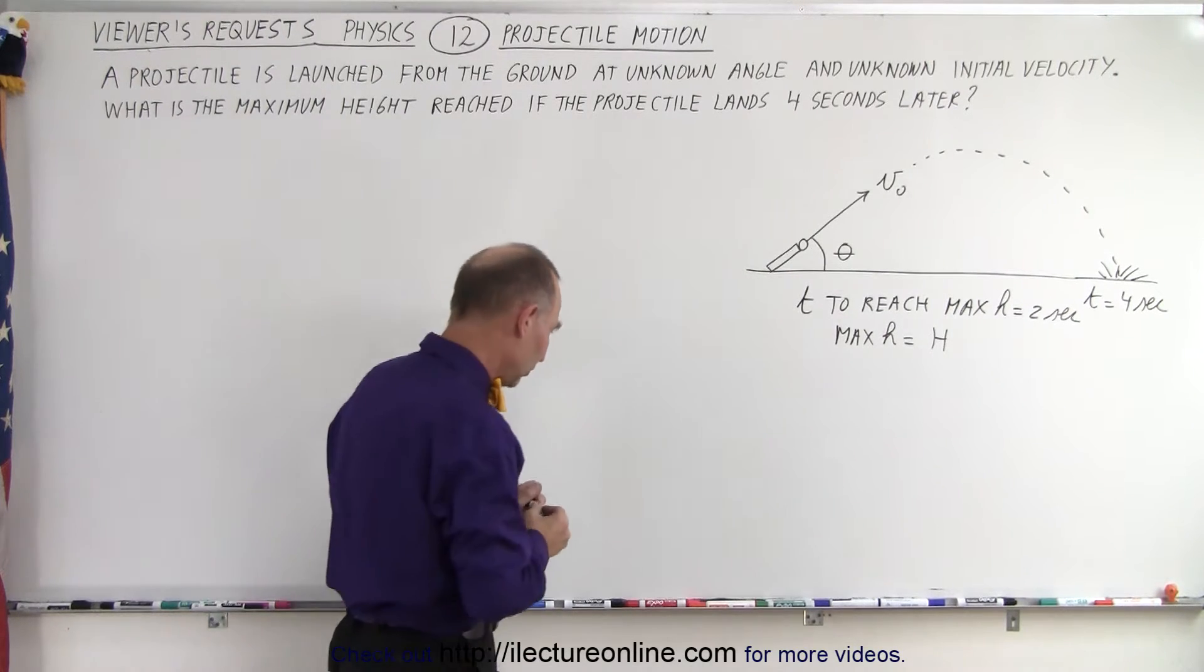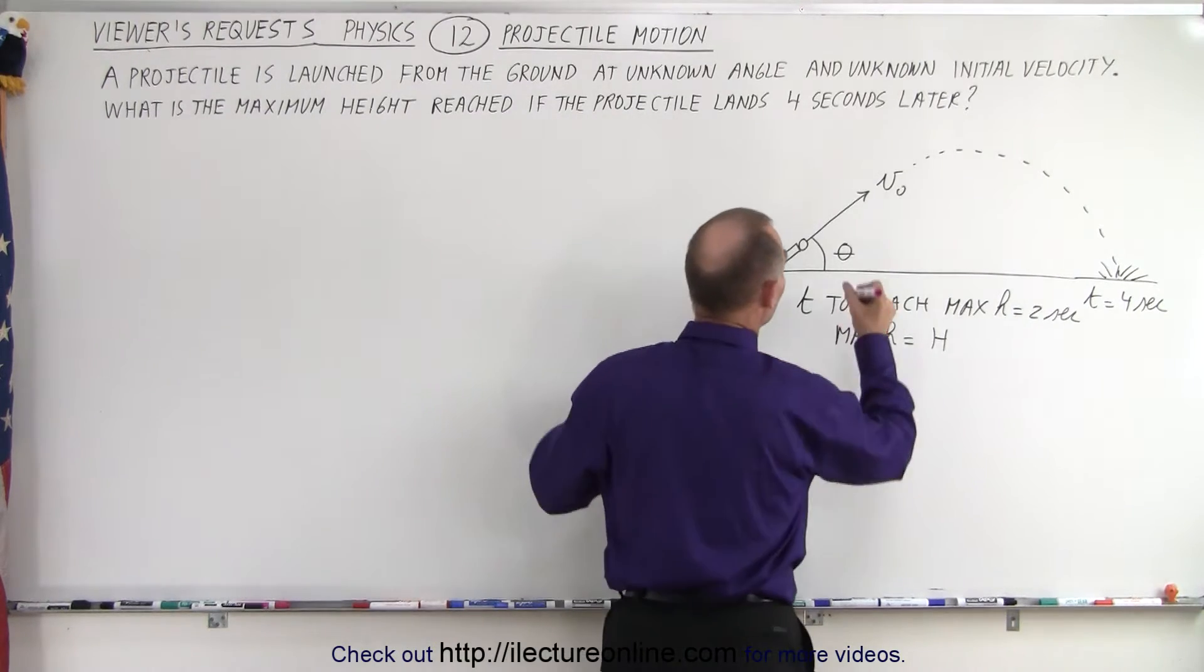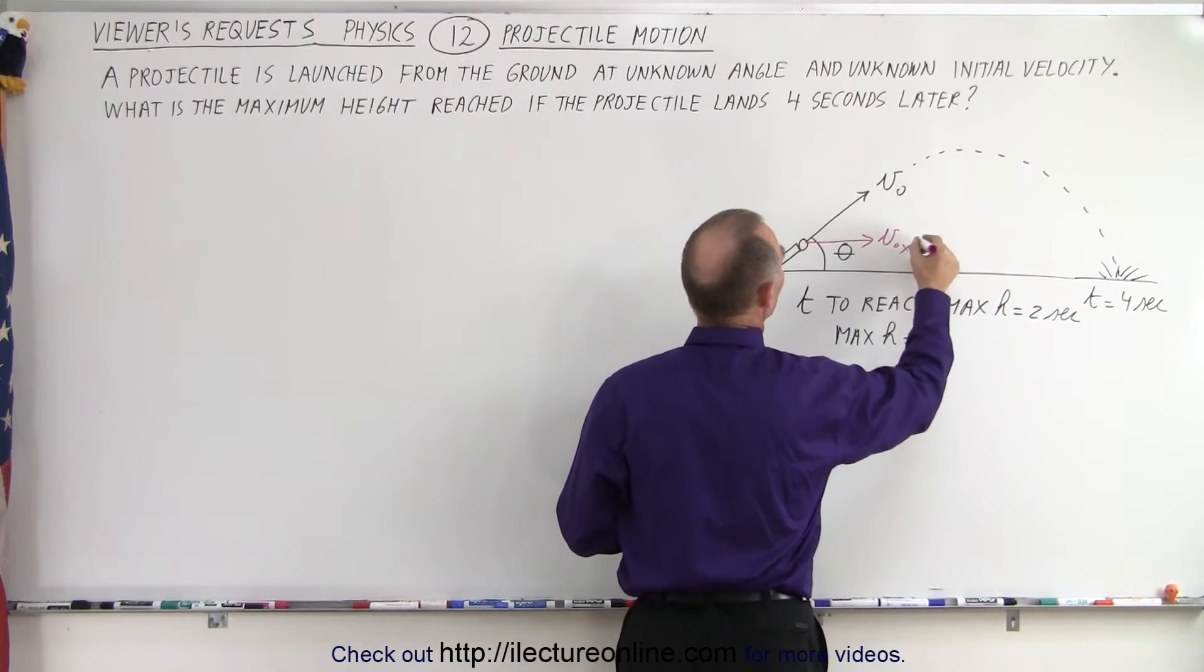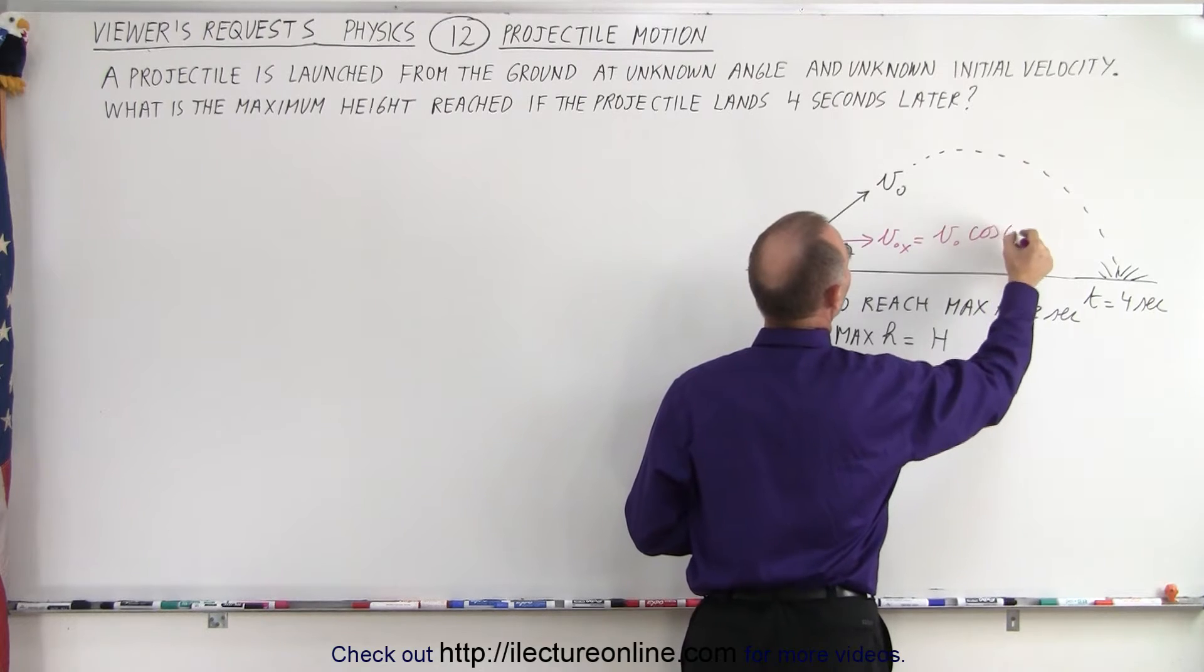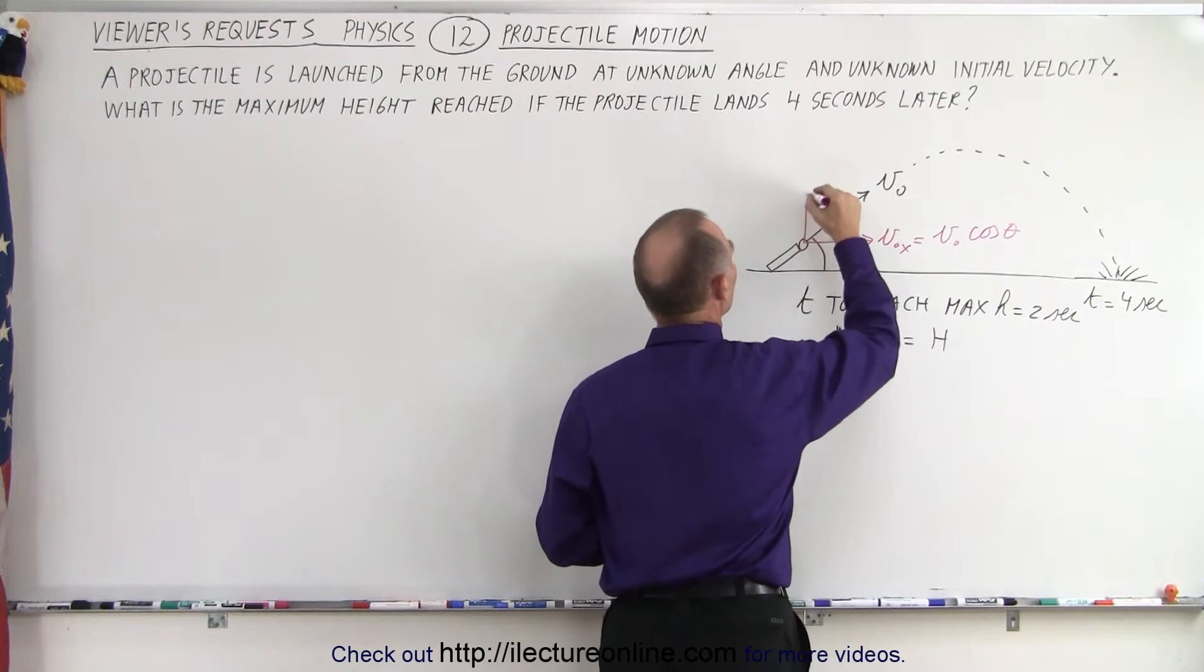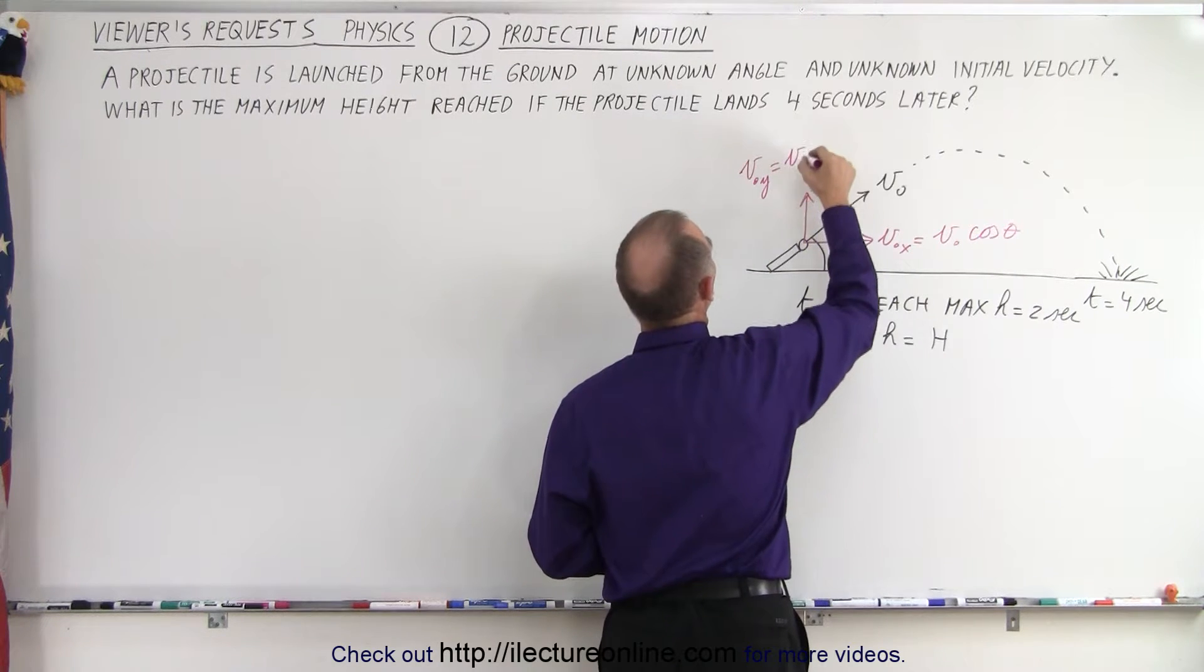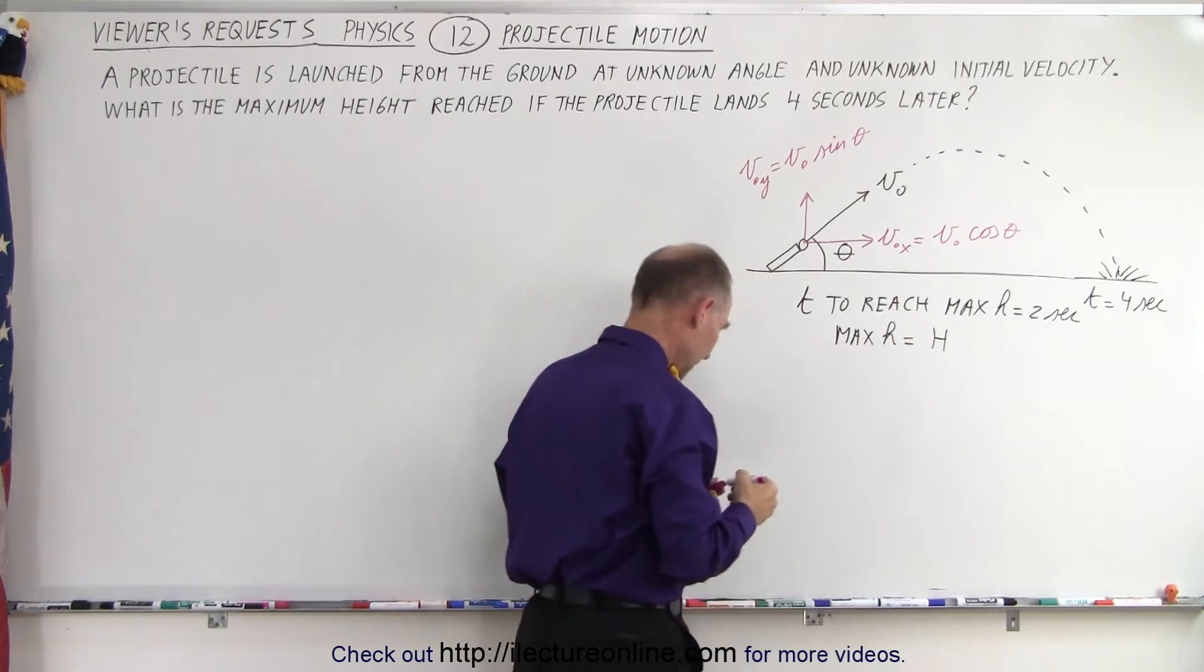Now we're going to find the horizontal and vertical components of that initial velocity. So we have v initial in the x direction, which equals v initial times the cosine of the angle theta. And v initial in the y direction equals v initial times the sine of theta.